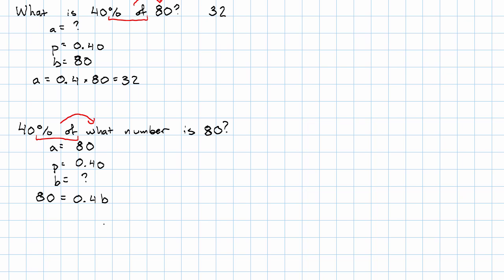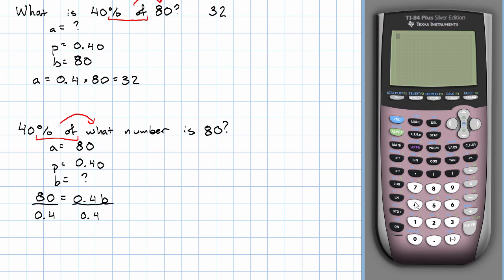To get B by itself now, we need to divide by 40%. This looks like a job for the calculator. 80 divided by 0.4 is 200. 40% of what number is 80? 200.